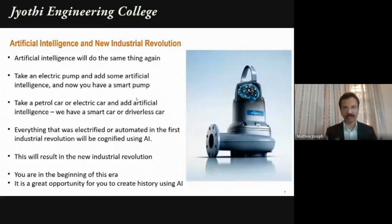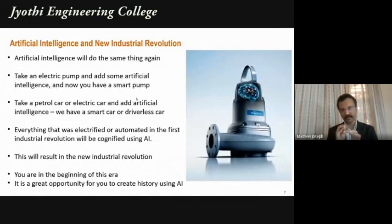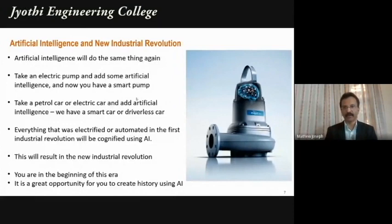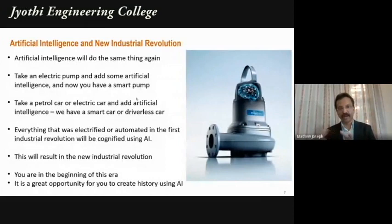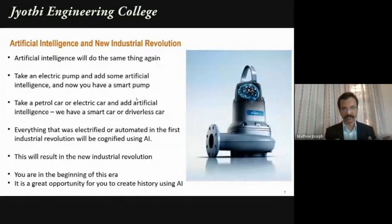When you add artificial intelligence to that lorry, it becomes a driverless car — you don't need even one person. That may not happen today, but in 10 to 20 years, automobiles will carry cargo from Cochin to Thrissur on their own without human intervention. So first it was manual power, then artificial power from the industrial revolution, and now artificial intelligence is making machines smart. This is what people call Industry 4.0.